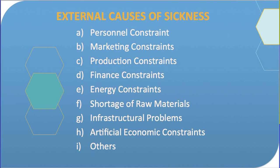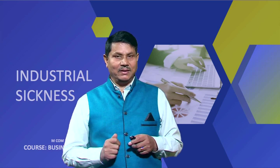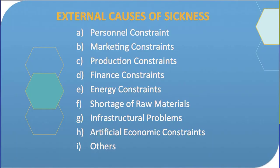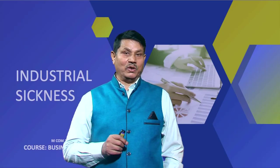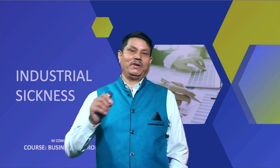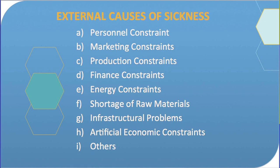Production constraints is another reason for sickness under external causes. This arises due to shortage of raw material, shortage of power, high price of fuel, import-export restrictions, etc. Finance constraints is another important external cause for sickness, especially for small-scale units. This arises due to credit restraint policies, delay in disbursement of loans by the government, unfavorable investments, and fear of nationalization. One of the most significant external causes is energy constraints — energy crises arising out of power cuts or shortage of coal and oil have been a serious problem for many industrial units.